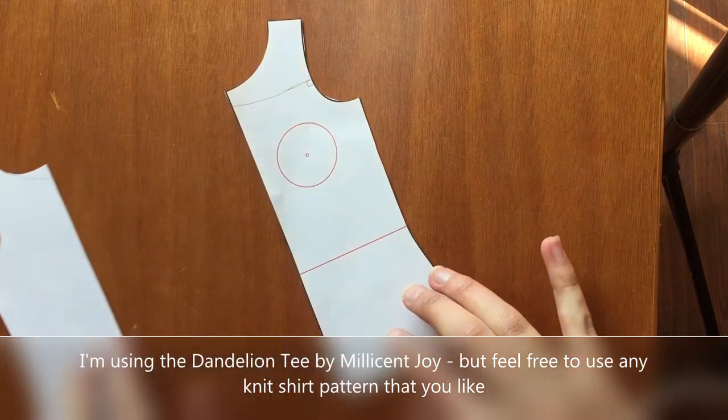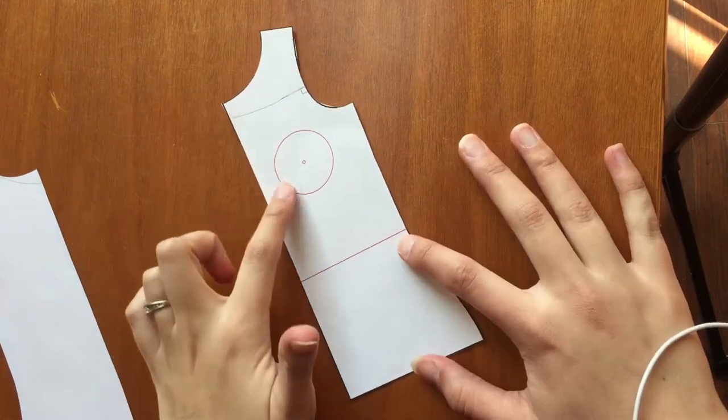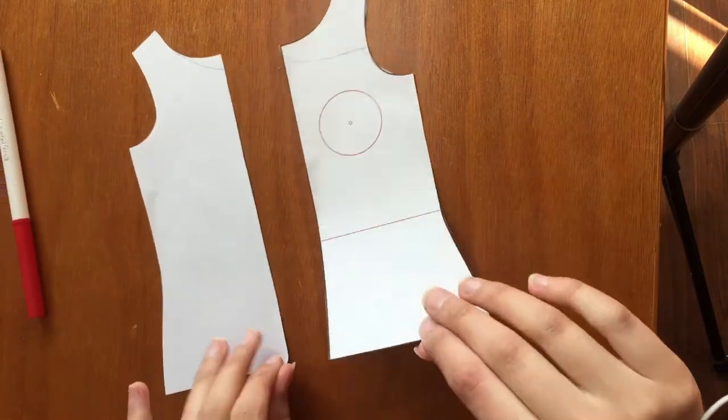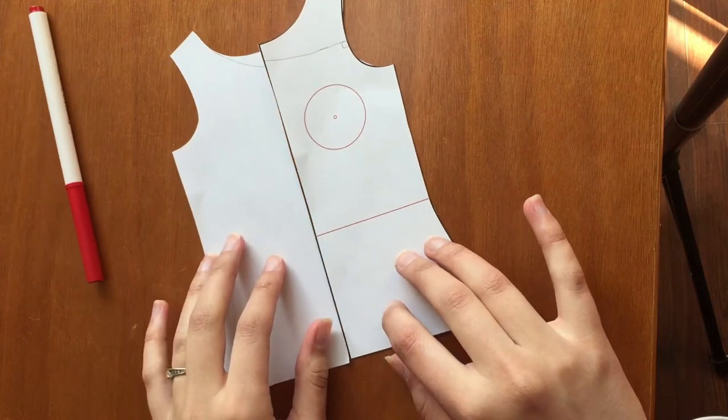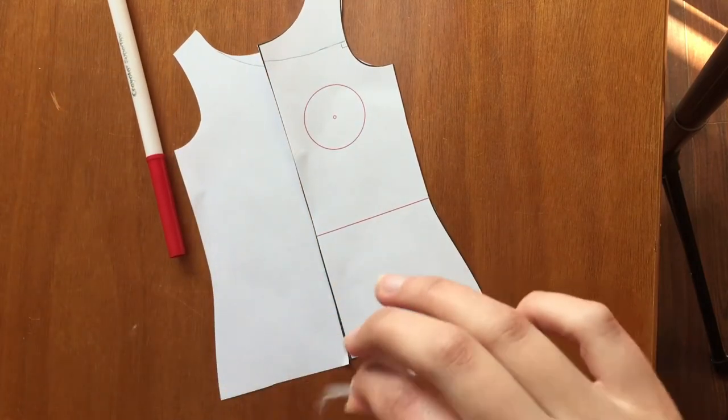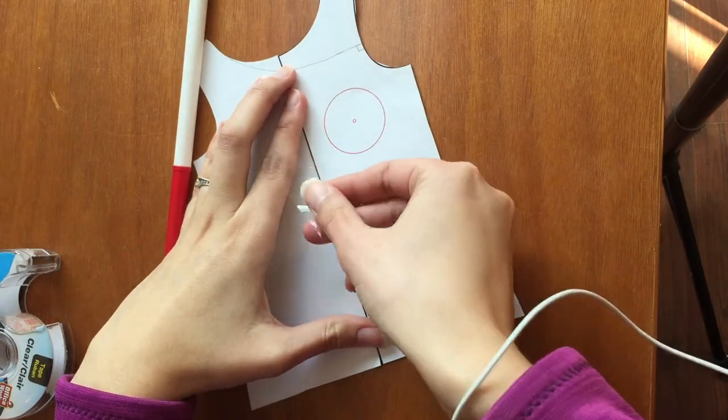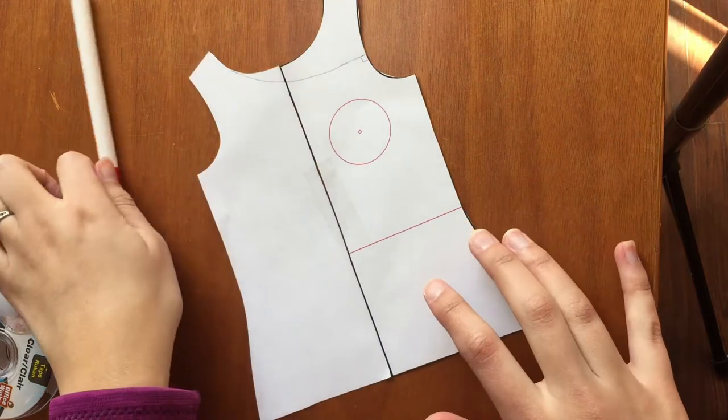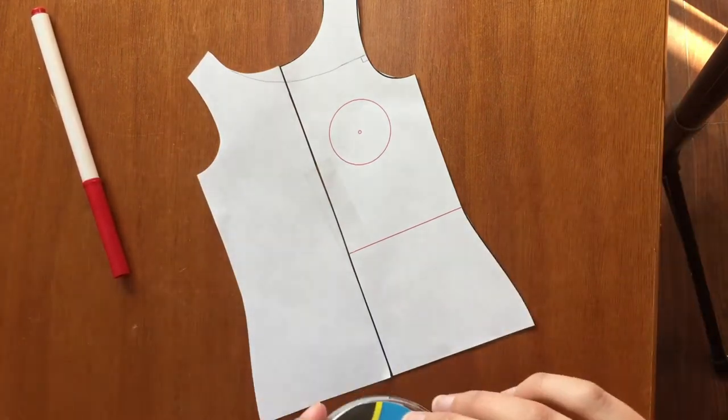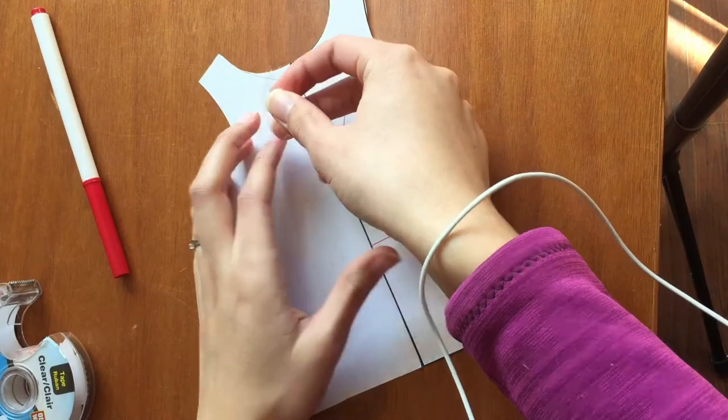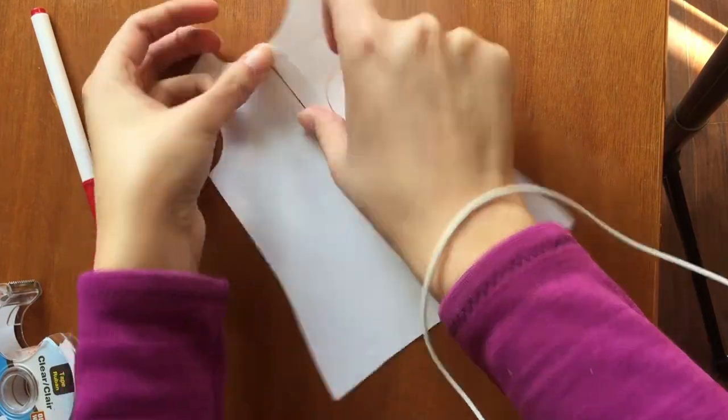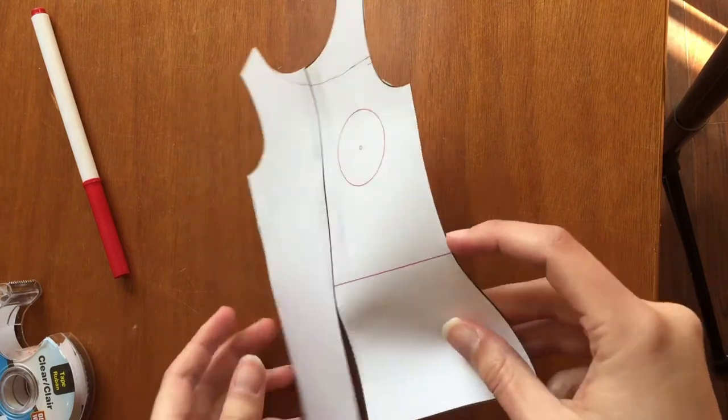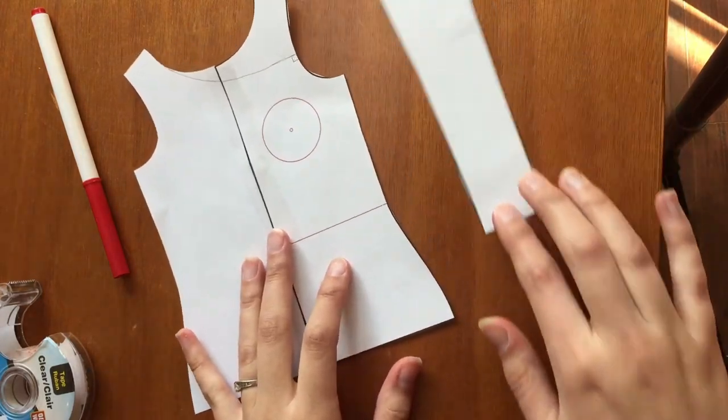So the first thing you're going to want to do, normally your front, this would be the fold here, is you're going to want to trace this out so you have two of them, and then you're going to want to tape them together. So there we have a full front piece, this is what it would look like if you cut it out of fabric, and I also have my sleeve.